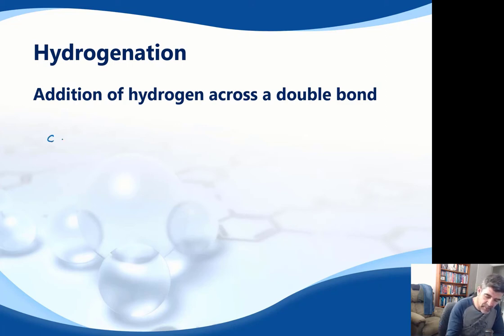If I take a simple unsaturated hydrocarbon like ethene, then what I have here is a concentration of electrons, a high density of electrons that are associated with that double bond, four electrons in this space.